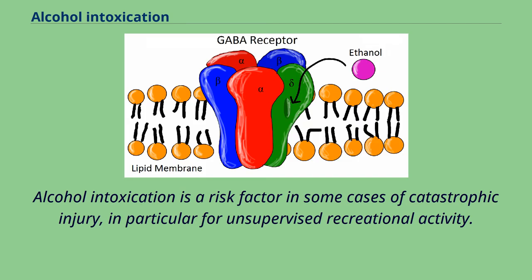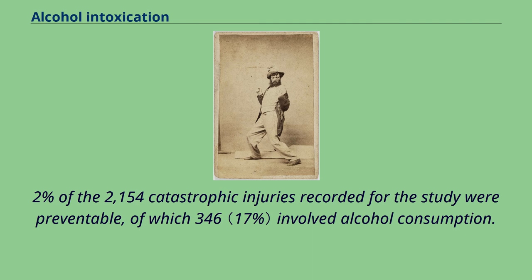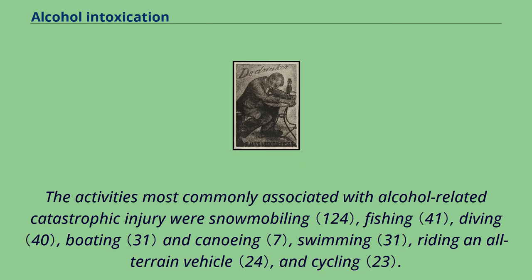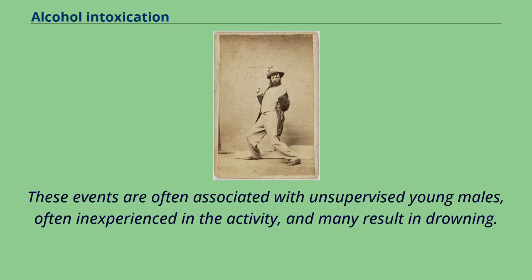Alcohol intoxication is a risk factor in some cases of catastrophic injury, in particular for unsupervised recreational activity. A study in the province of Ontario based on epidemiological data from 1986, 1989, 1992, and 1995 states that 79.2% of the 2,154 catastrophic injuries recorded were preventable, of which 346 involved alcohol consumption. The activities most commonly associated with alcohol-related catastrophic injury were snowmobiling, fishing, diving, boating and canoeing, swimming, riding an all-terrain vehicle, and cycling. These events are often associated with unsupervised young males, often inexperienced in the activity, and many result in drowning.